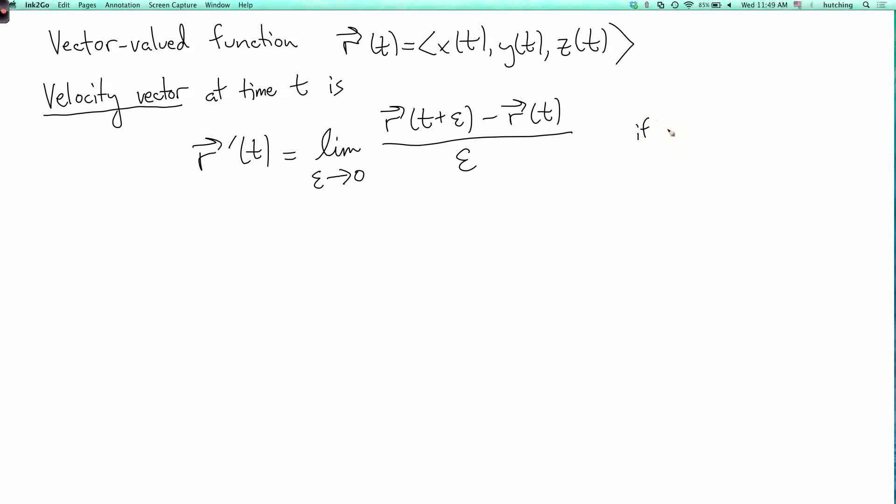So as always, when we write a definition like this, it's only defined if the limit exists. Now it's not hard to check that this is equal to the vector x prime of t comma y prime of t comma z prime of t when all those are defined.